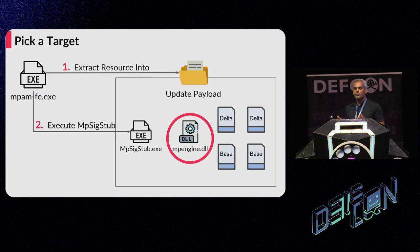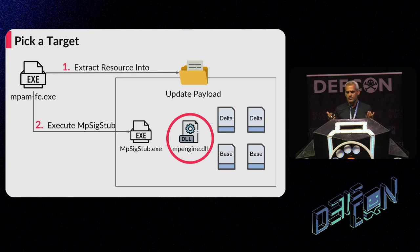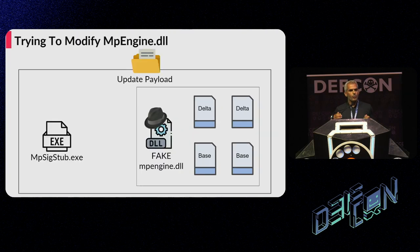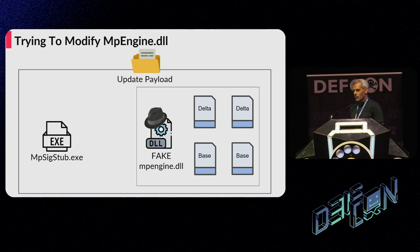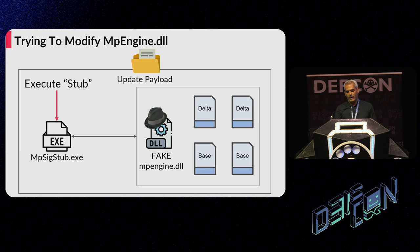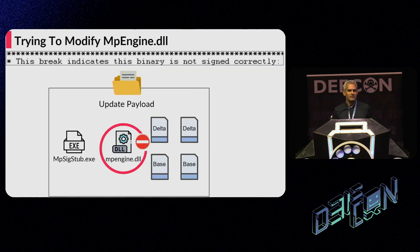If we can modify MP Engine DLL to our own fake DLL, it will be game over for Defender, resulting in local privilege escalation. We modified a valid update payload downloaded from the internet and replaced only the original MP Engine DLL with our fake DLL — even though the original DLL was digitally signed by Microsoft. We then executed MP6Tab with the appropriate command line, and of course this attempt failed.